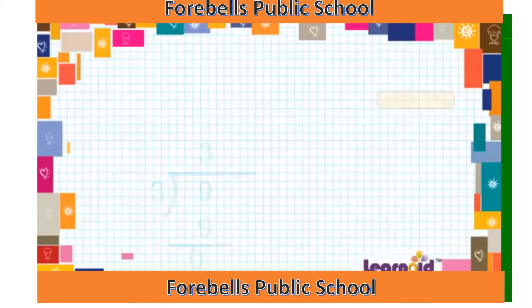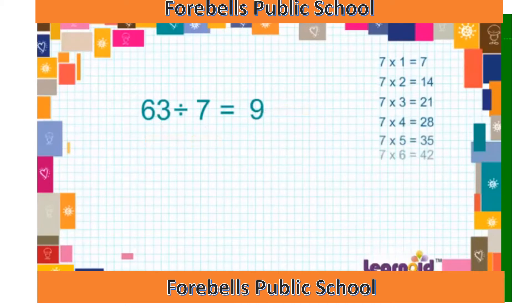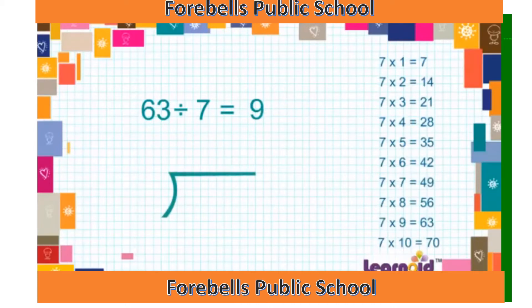Let's check with one more example. 63 divided by 7 is equal to 9. We can show this in long form of division like this.